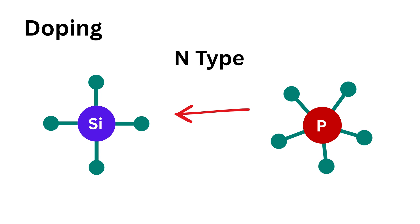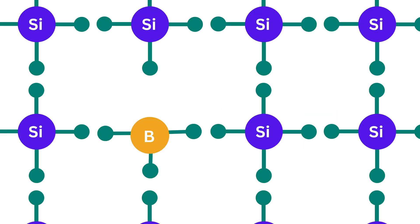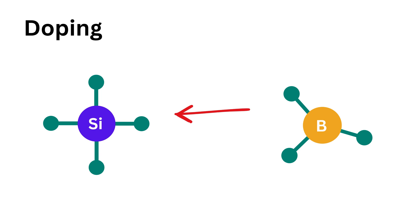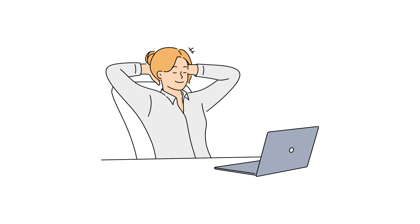Now consider the case of atoms with three valence electrons, like boron. When boron replaces a silicon atom, it can only form three bonds—there's one missing bond, a kind of hole. Electrons from neighboring atoms can jump to fill this hole, leaving a new hole behind, kind of like musical chairs. The hole acts like a positive charge carrier because the absence of a negative charge is like a positive one. So this is called P-type material, where P means positive.